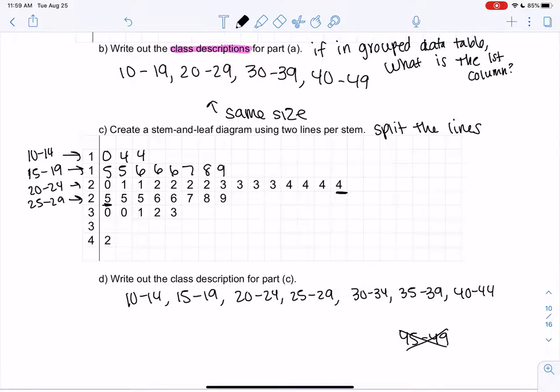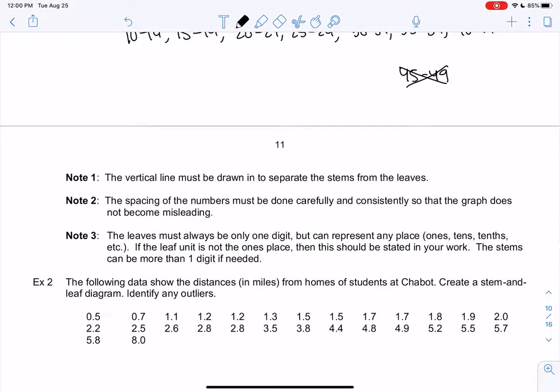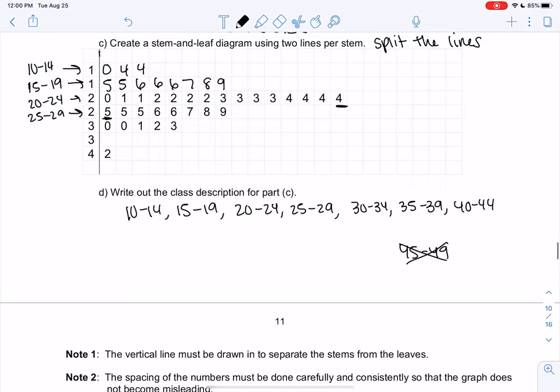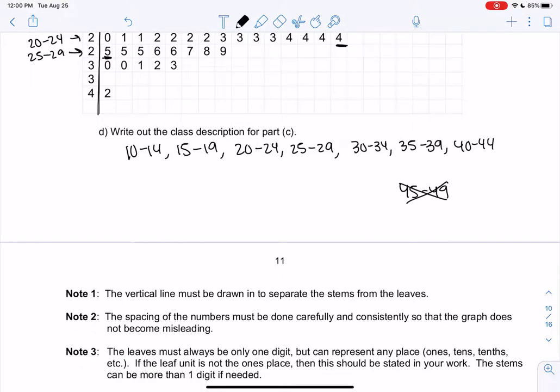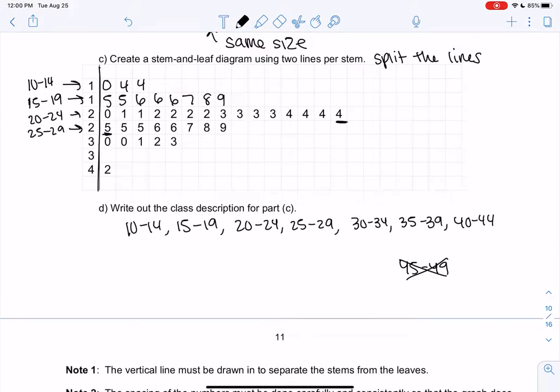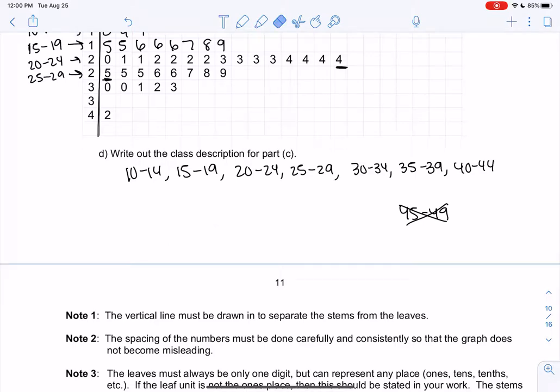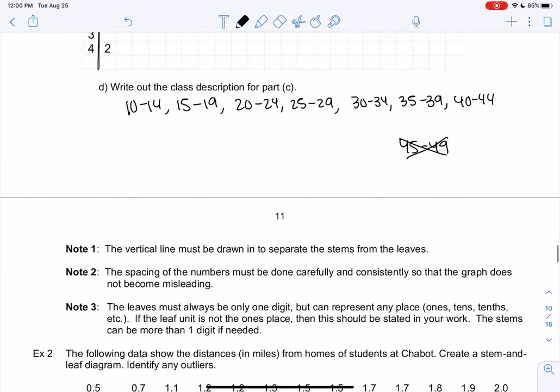So let's do a few notes about it and then let's make one from scratch. The vertical line must be drawn in to separate the stems and the leaves. The spacing of the numbers should be careful and consistent so it's not misleading. So notice my numbers are the same size. Don't do 0, 4, 4, and then 5, 5, 6, 6, 6, that's misleading. So keep your handwriting the same size.